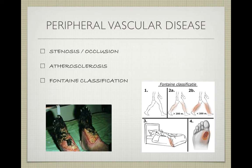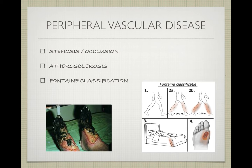A large proportion of patients who receive vascular intervention have peripheral vascular disease, so this presentation will focus on that. A large part of the population, and certainly many patients eligible for vascular intervention, have a form of peripheral vascular disease — most often stenosis or occlusion in the vessels, which compromises blood flow to the extremities and can cause ischemic symptoms such as pain.